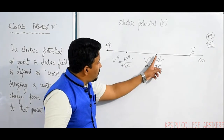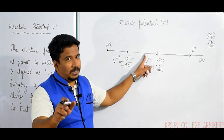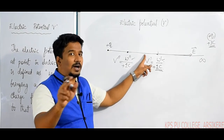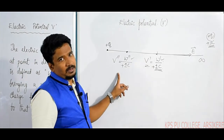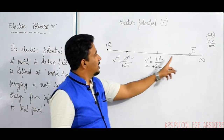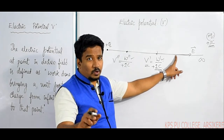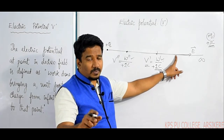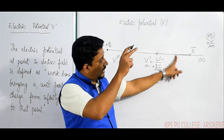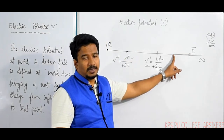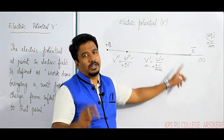If we look at each point, the work done is different, so the potential is different at each point. This work done per one coulomb charge, in bringing it from infinity to a particular point, is what we call Electric Potential.